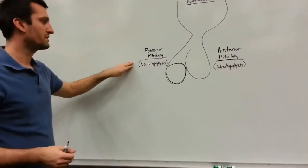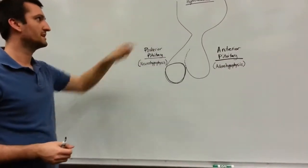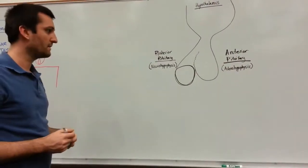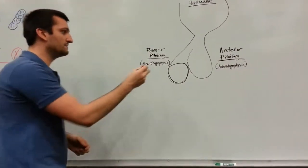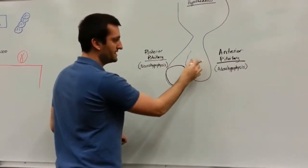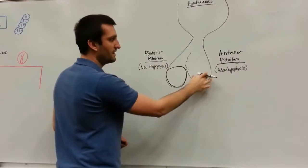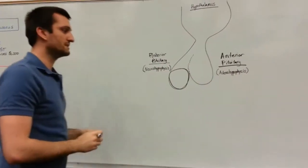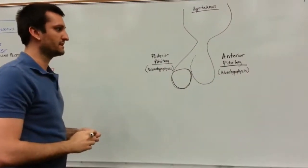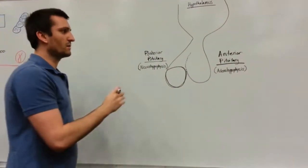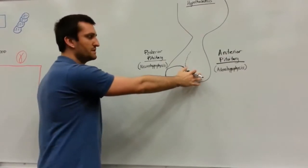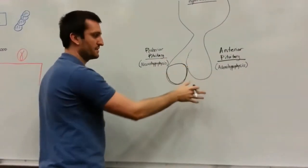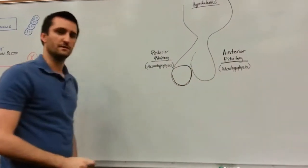All the posterior pituitary hormones are synthesized in the hypothalamus. The area down here is going to be called the pars distalis. That's going to be where a lot of the anterior pituitary hormones are going to be synthesized and then released into the bloodstream.